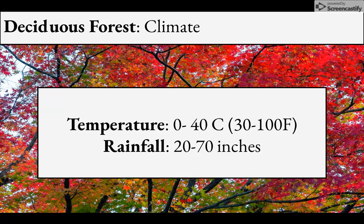The temperatures in the deciduous forest depend on what season it is, just like for us. It can range from freezing all the way to about 100 degrees Fahrenheit. Rainfall is about 20 to 70 inches — compare that to the rainforest, which can get up to 160 inches, while the desert gets less than 10 inches of rain.